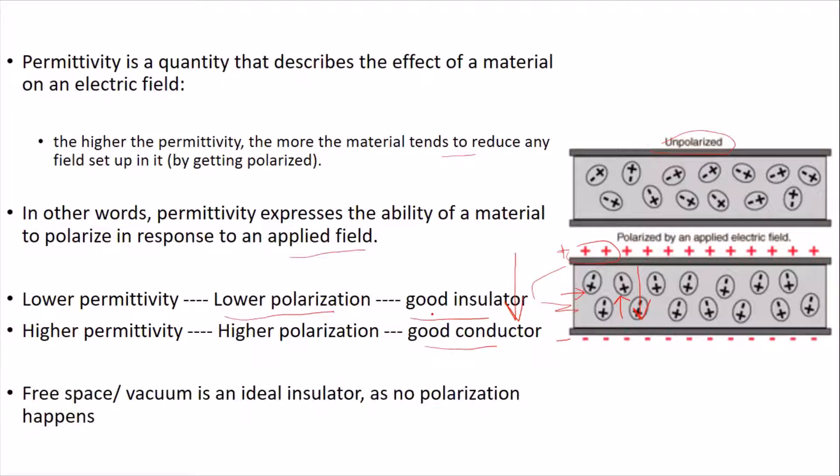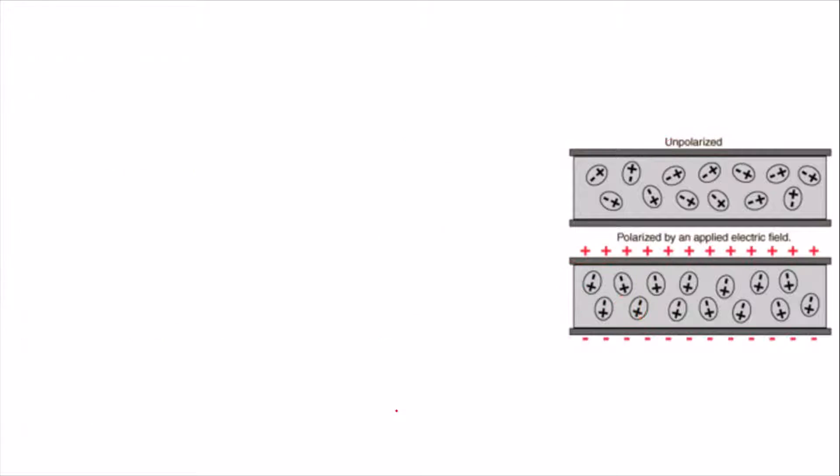We can take an example of free space or vacuum. We call it as an ideal insulator, as no polarization happens in the material. So this is the permittivity.